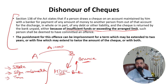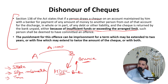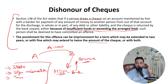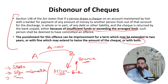Section 138 of the Act states: if a person draws a check on an account maintained by him with a banker for payment of any amount of money to another person, and the check bounces because of insufficient balance or exceeding the arrangement limits, then Section 138 is applicable. The punishment is two years of imprisonment, or a fine which may extend to twice the amount of the check, or both.